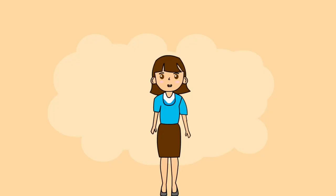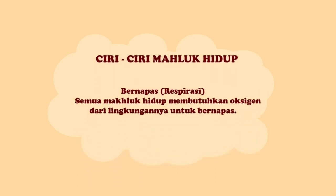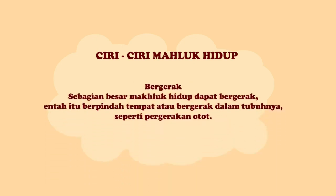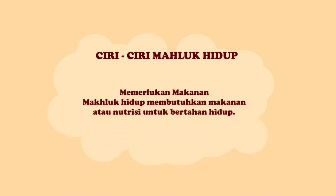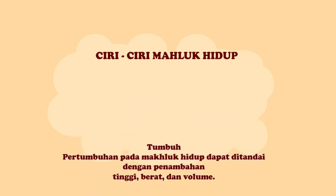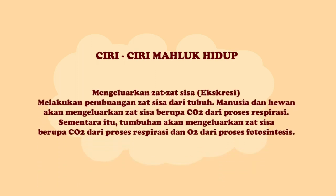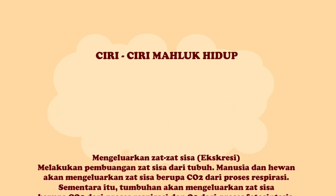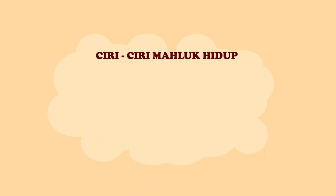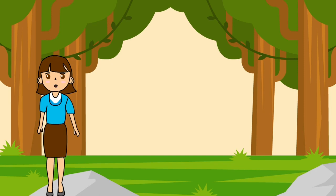Sebelum kita mempelajari perkembangbiakan tumbuhan dan hewan, yuk ketahui terlebih dahulu ciri-ciri makhluk hidup. Terdapat 8 ciri-ciri makhluk hidup: pertama, bernapas; kedua, bergerak; ketiga, memerlukan makanan; keempat, tumbuh; kelima, peka terhadap rangsangan; keenam, mengeluarkan zat-zat sisa atau ekskresi; ketujuh, adaptasi; dan yang terakhir, berkembang biak atau reproduksi.